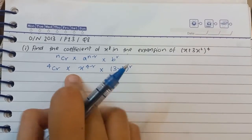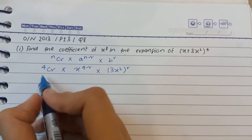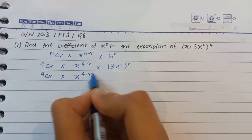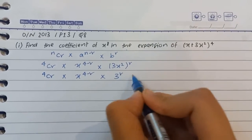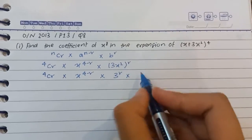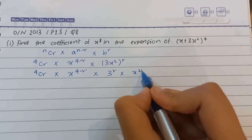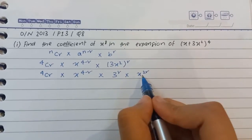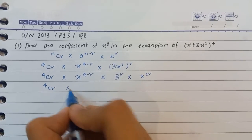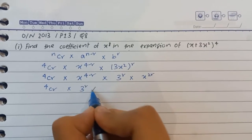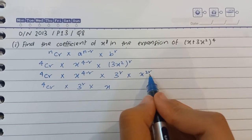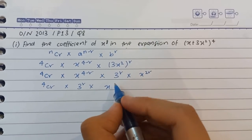Now I'm going to open the bracket so that we have the power of x separate. It's going to be 4Cr into x raised to the power 4 minus r, into 3 raised to the power r, into x raised to the power 2r. Now I'm going to combine the powers of x since the bases are the same, giving us 4Cr into 3 to the power r into x raised to the power...